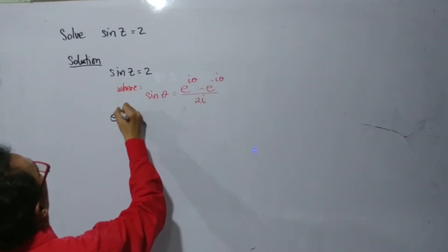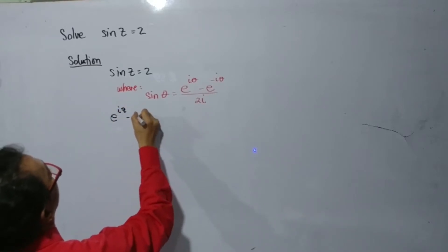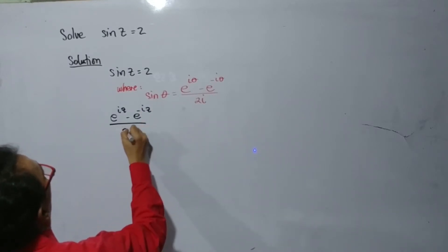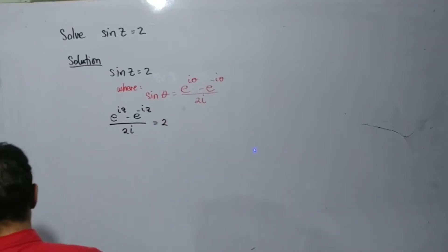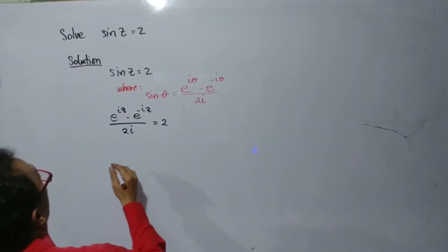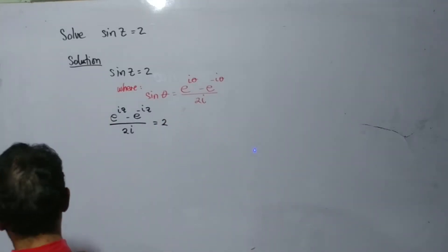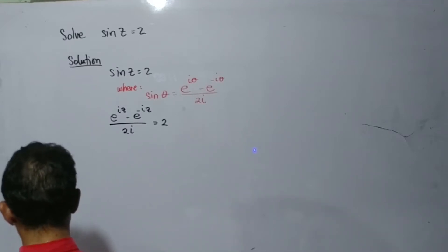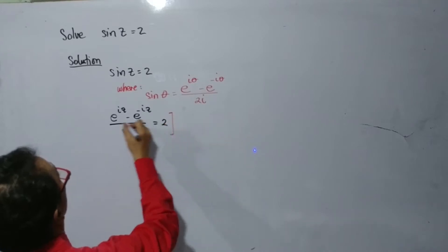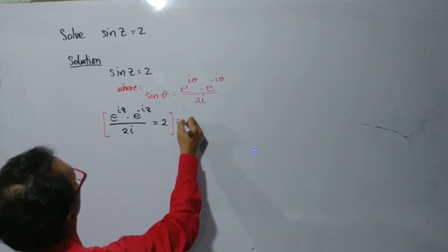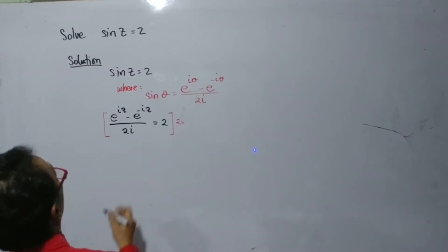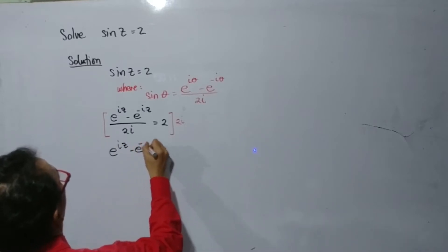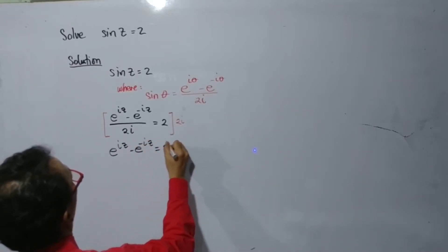We have e to the iz minus e to the negative iz, all over 2i, equals 2. Multiply both sides by 2i, so we have e to the iz minus e to the negative iz equals 4i.